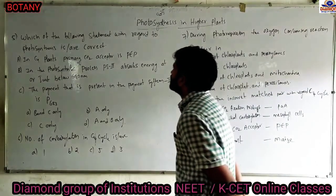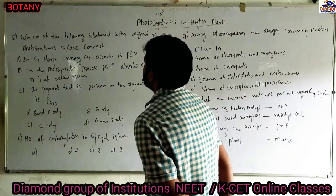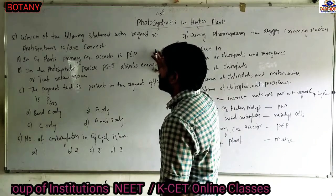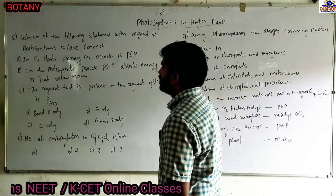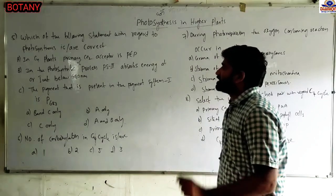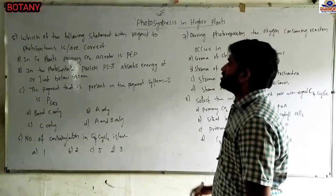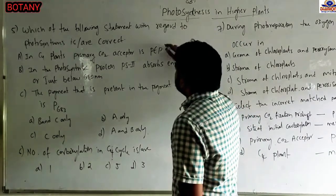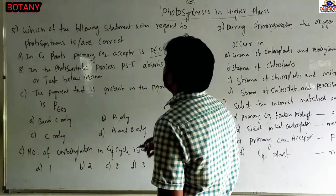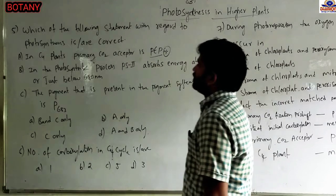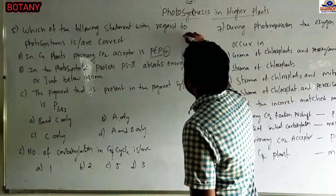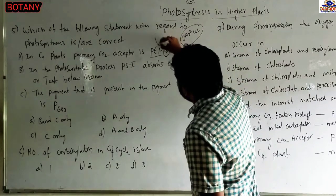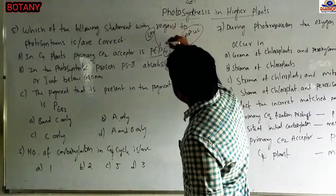Next question: Which of the following statements regarding photosynthesis is correct? Option A: C4 plant's primary CO2 acceptor is PEP — phosphoenolpyruvate acid, a three-carbon compound. In a C4 plant, the first-formed product is oxaloacetate, a four-carbon compound. Phosphoenolpyruvate fixes one CO2 molecule and forms oxaloacetate. So the first-formed product in C4 is a four-carbon compound — that's why it is called C4.